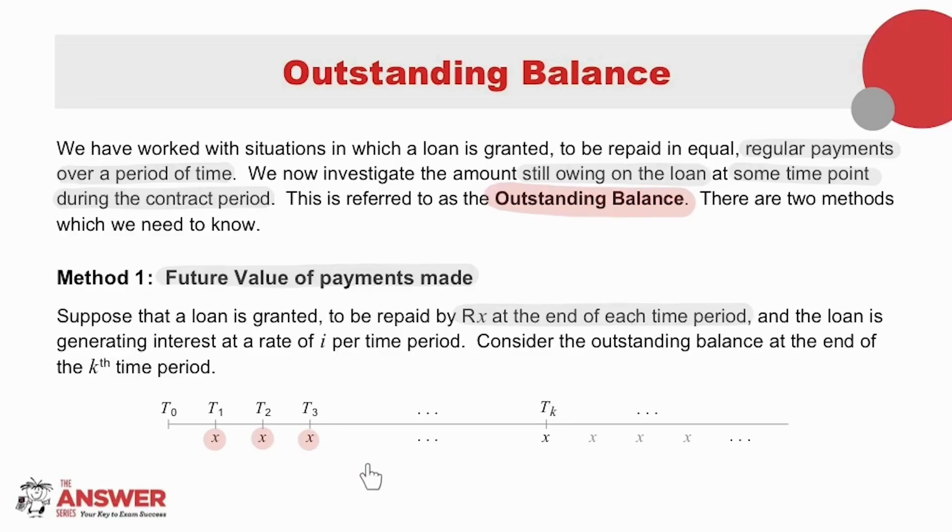Now all these Xs are payments that have already been made. Note the Xs that follow are greyed out. This is because for now we are only focusing on the Xs up until Tₖ.